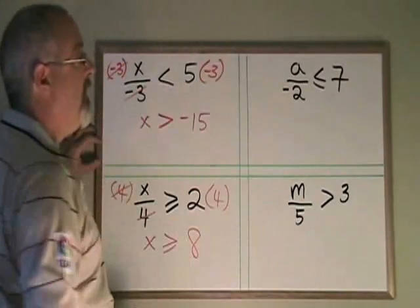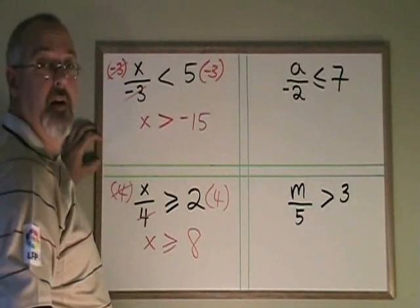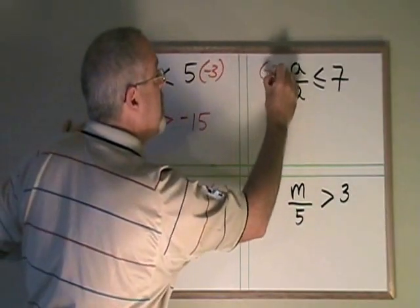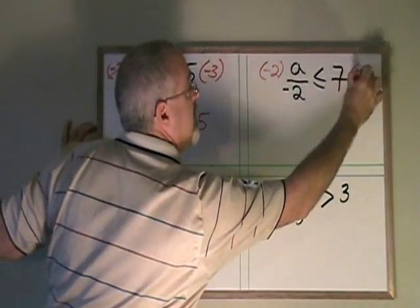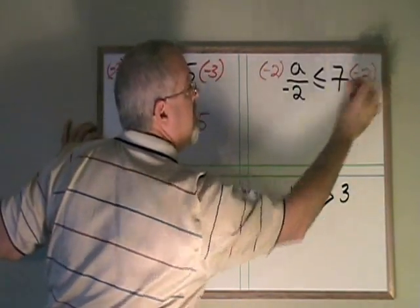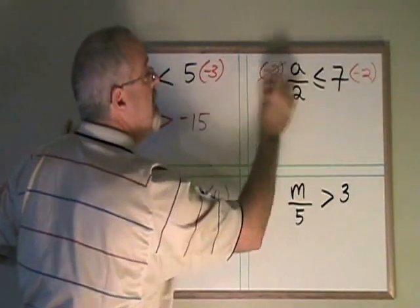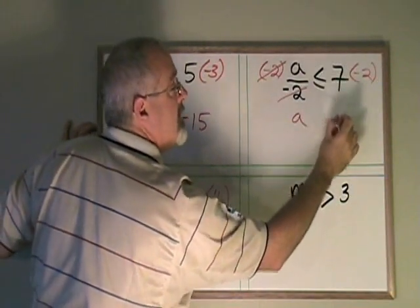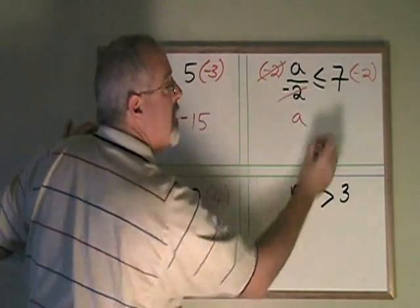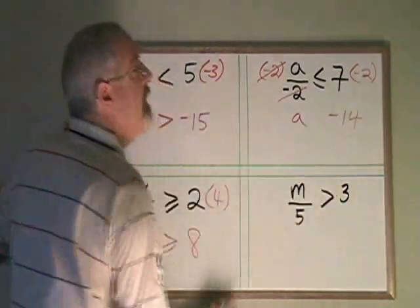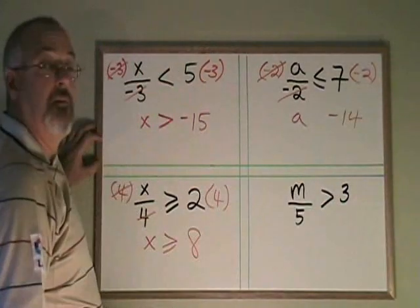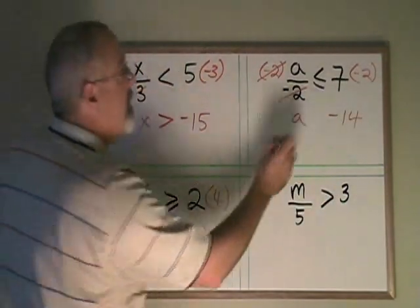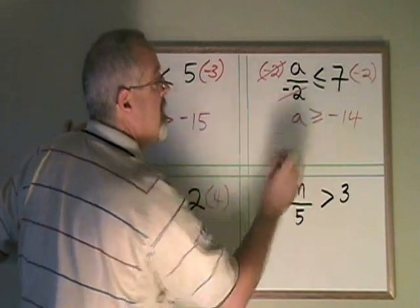Here, I am dividing my a by a negative 2. So I have to multiply both sides by negative 2. These cancel. My a is isolated. 7 times negative 2 is negative 14. And because I multiplied both sides by a negative number, I turn my symbol backwards.